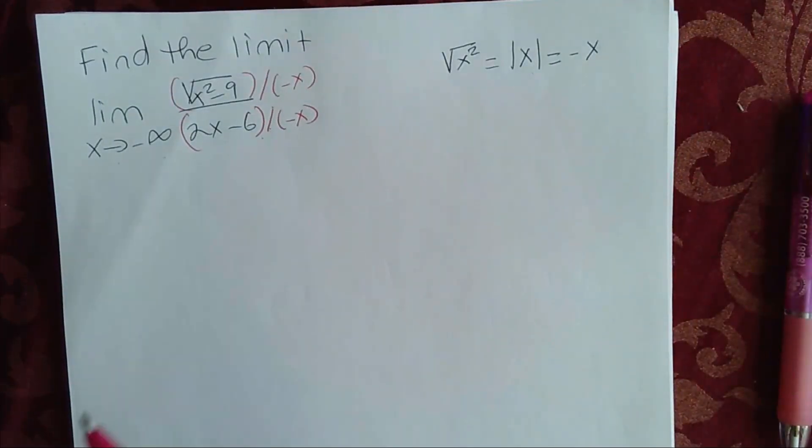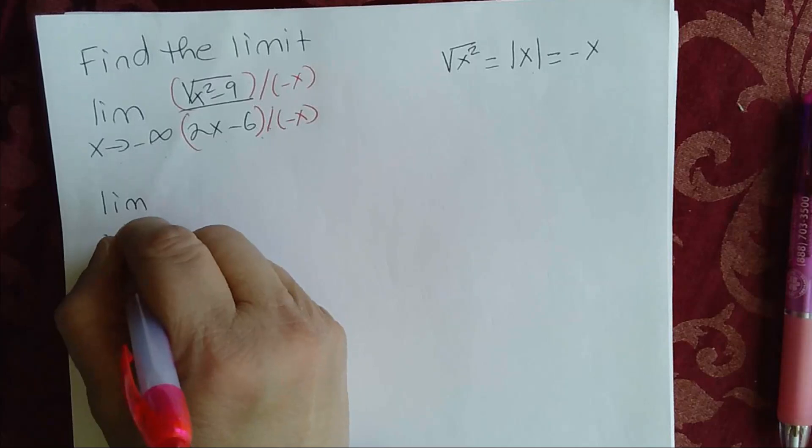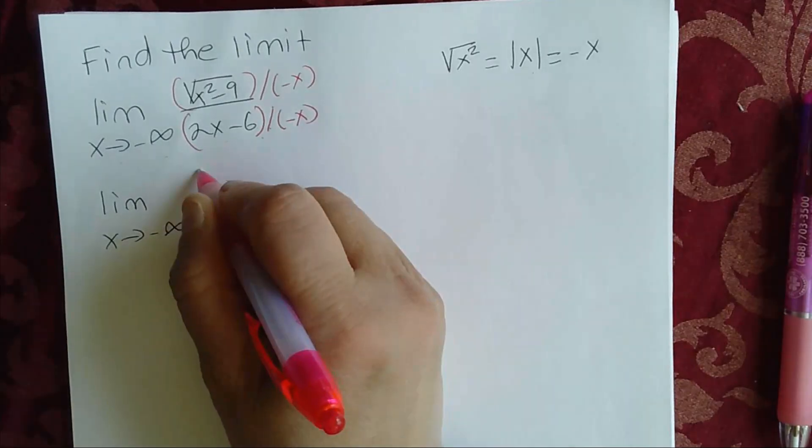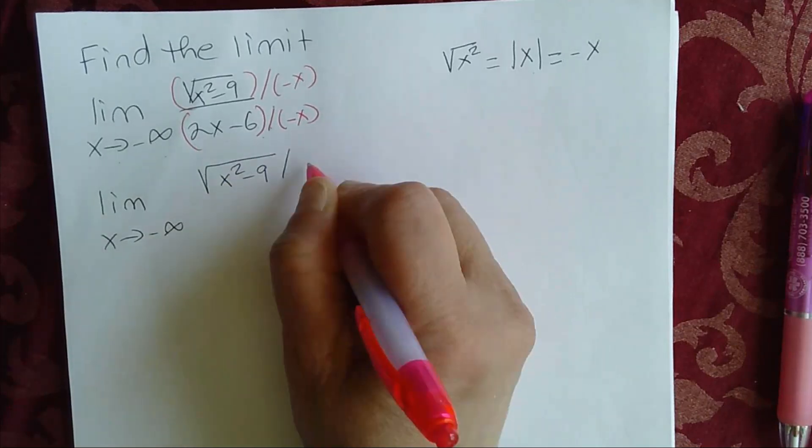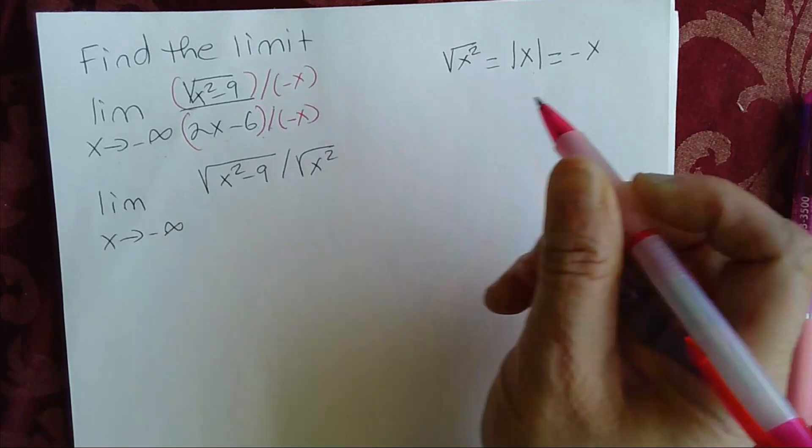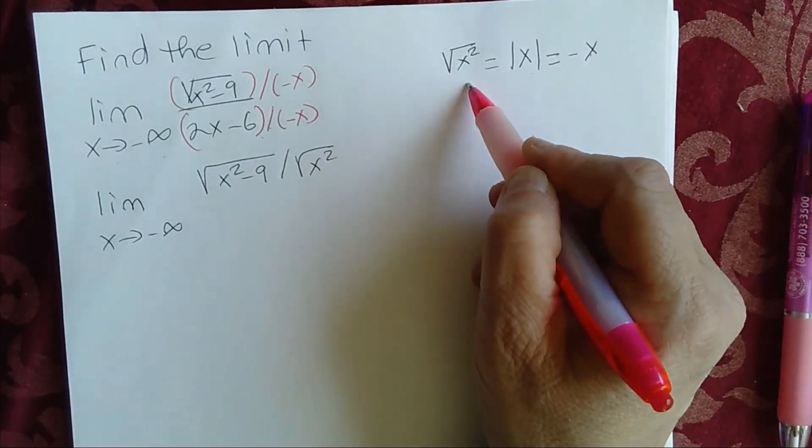Now this will give me, in the numerator, the square root of x squared minus 9 divided by square root of x squared. Remember, this is equal to this.